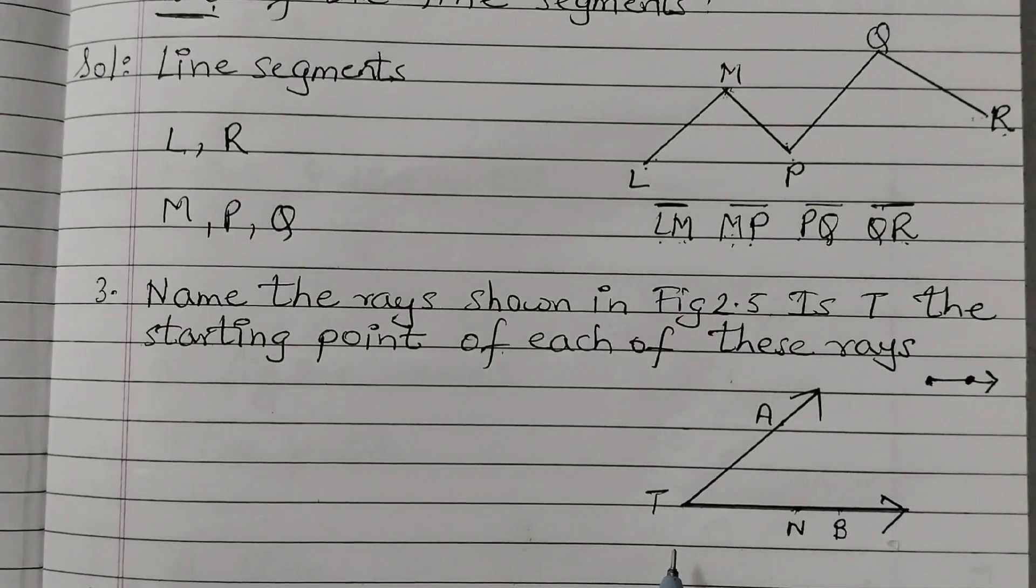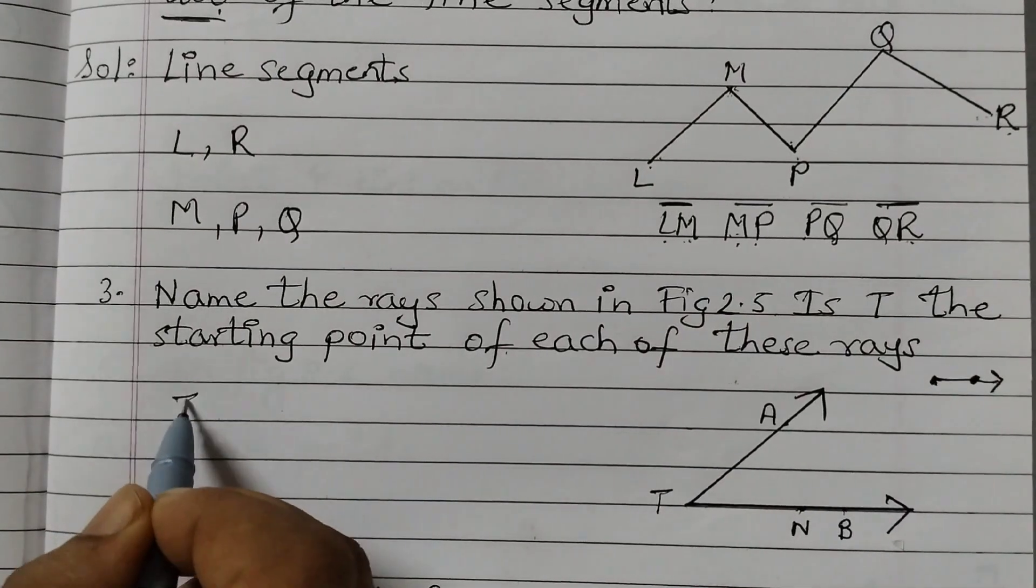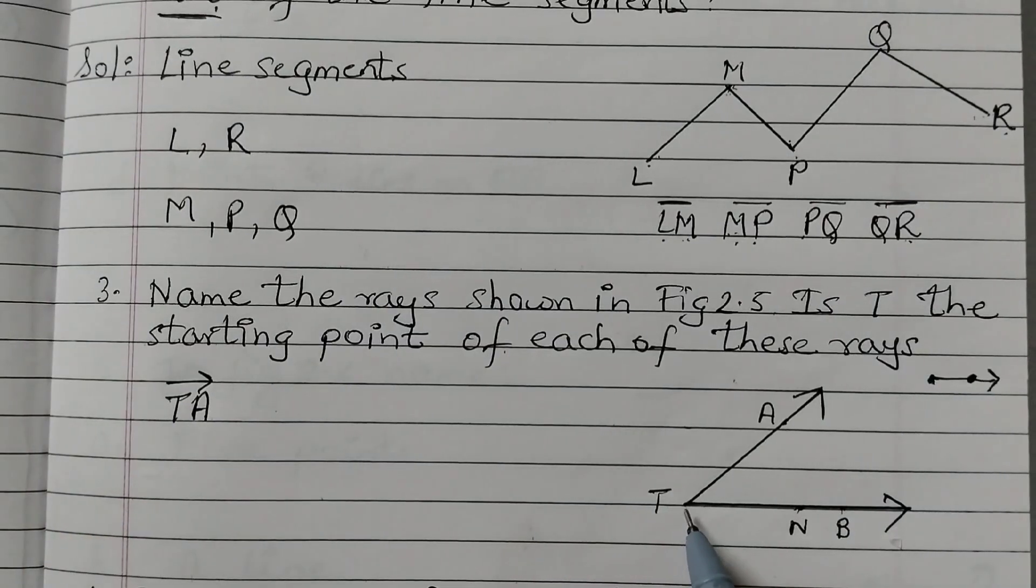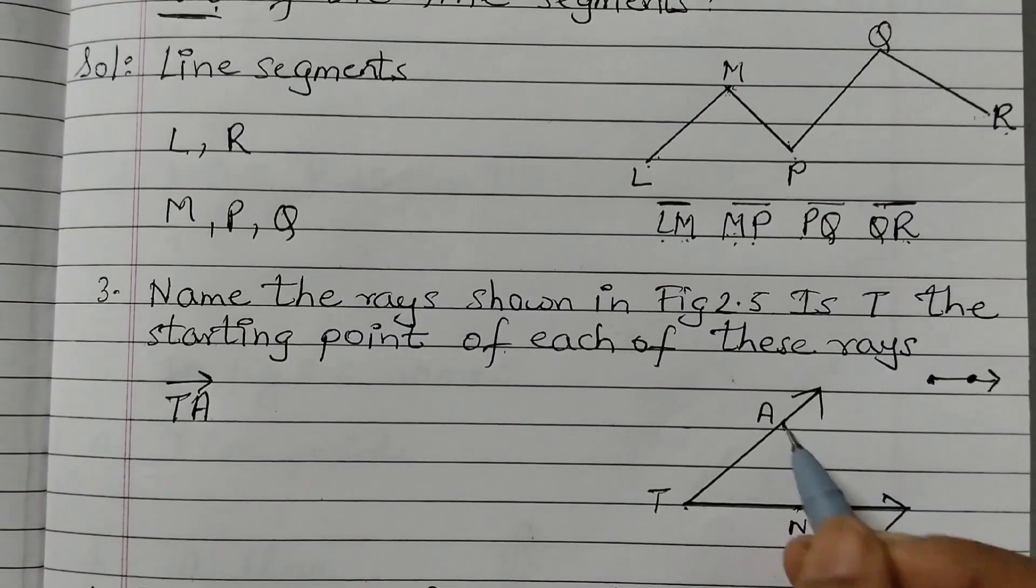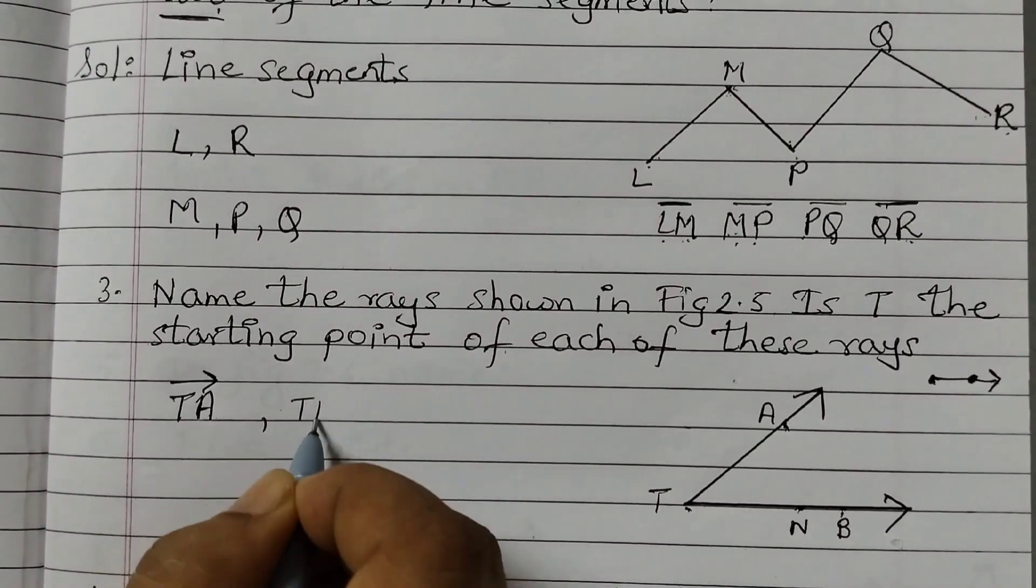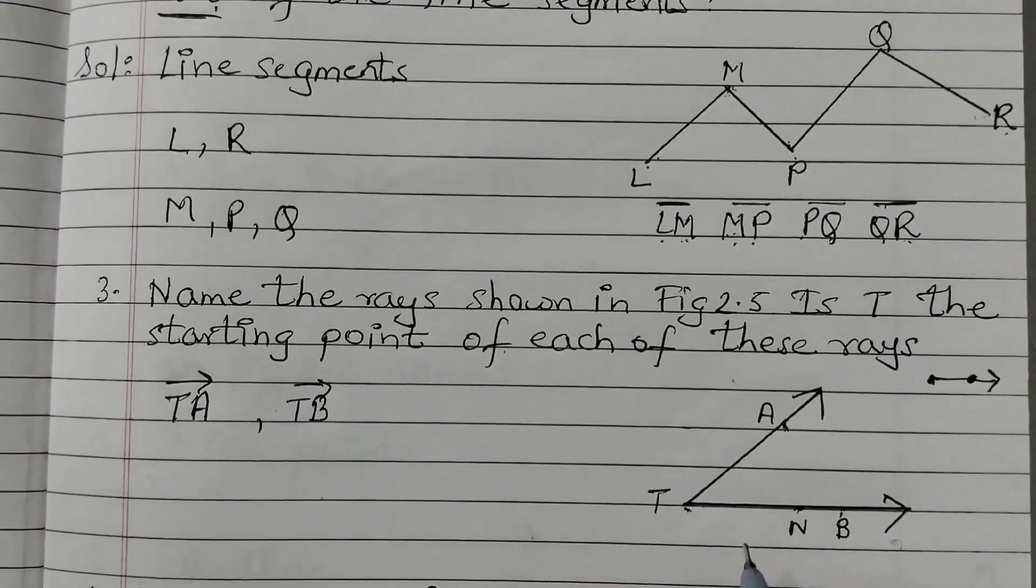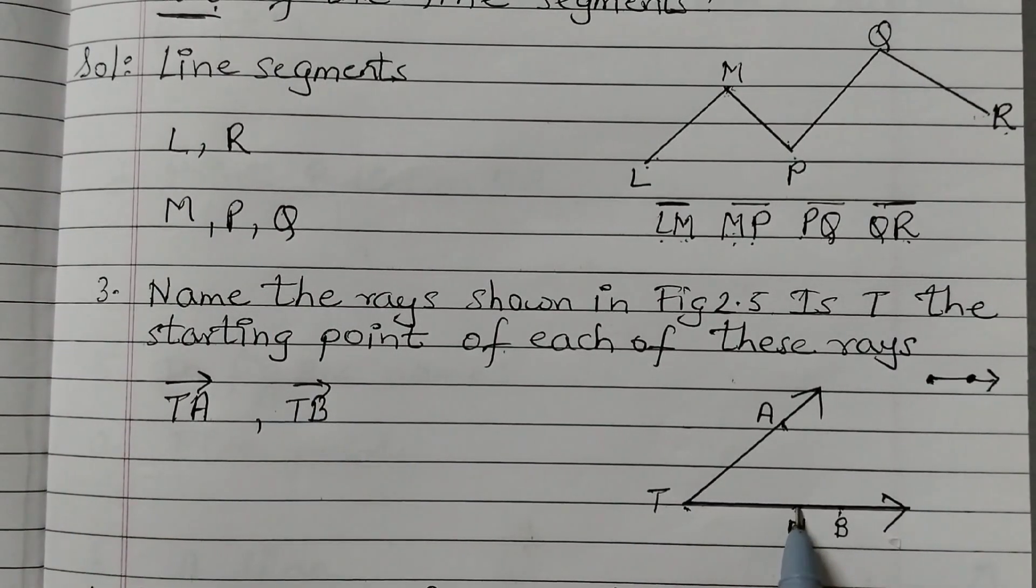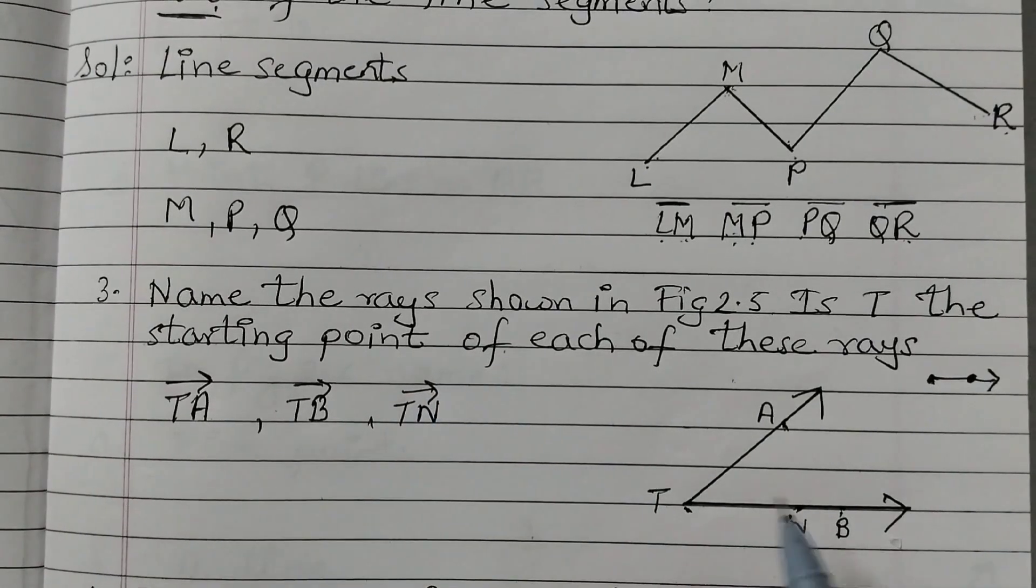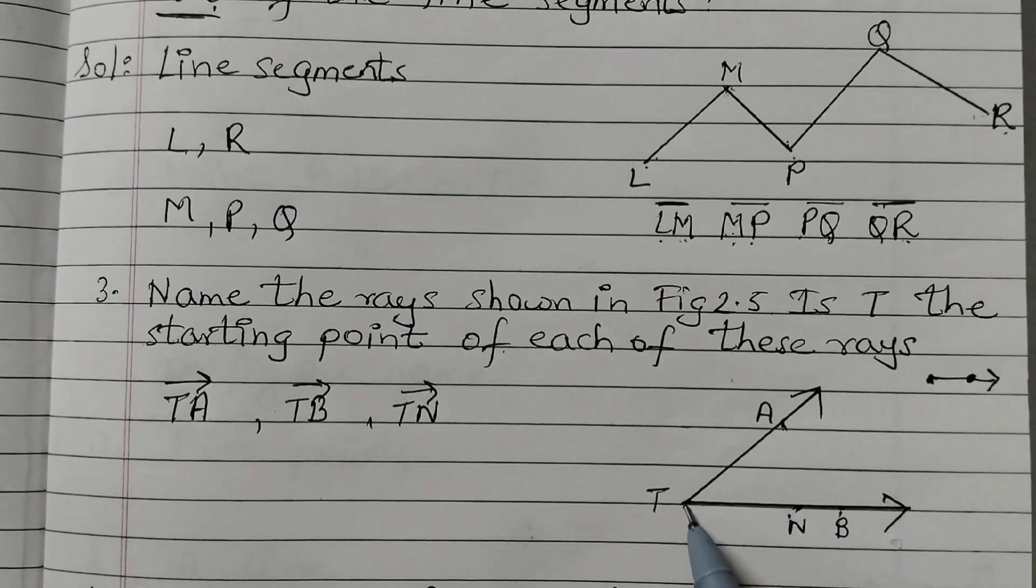So now here if you see the rays that we have is TA, starting point is T. So TA, then we can say TB, ray TB, and N is also there one point, right. So we can say ray TN. So we can say there are three rays here starting from T.